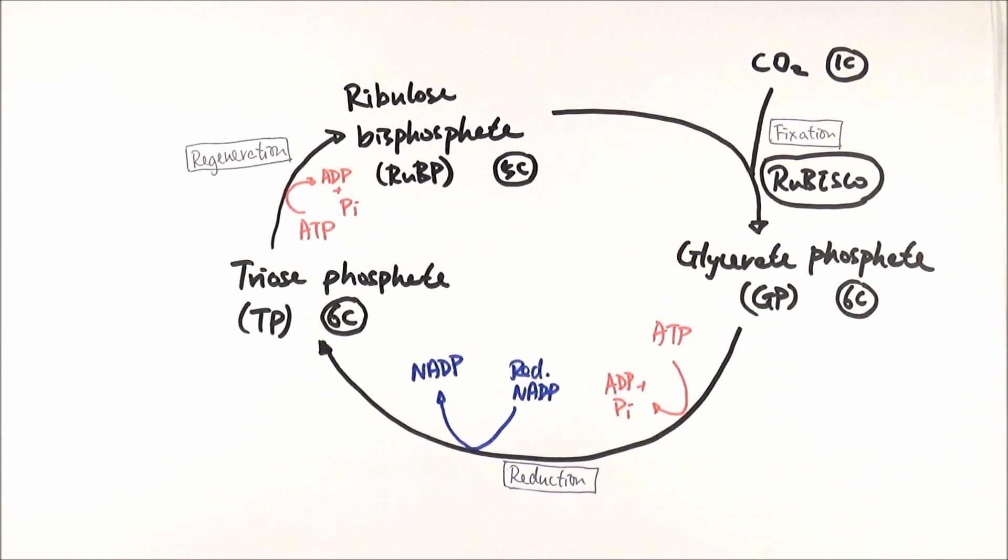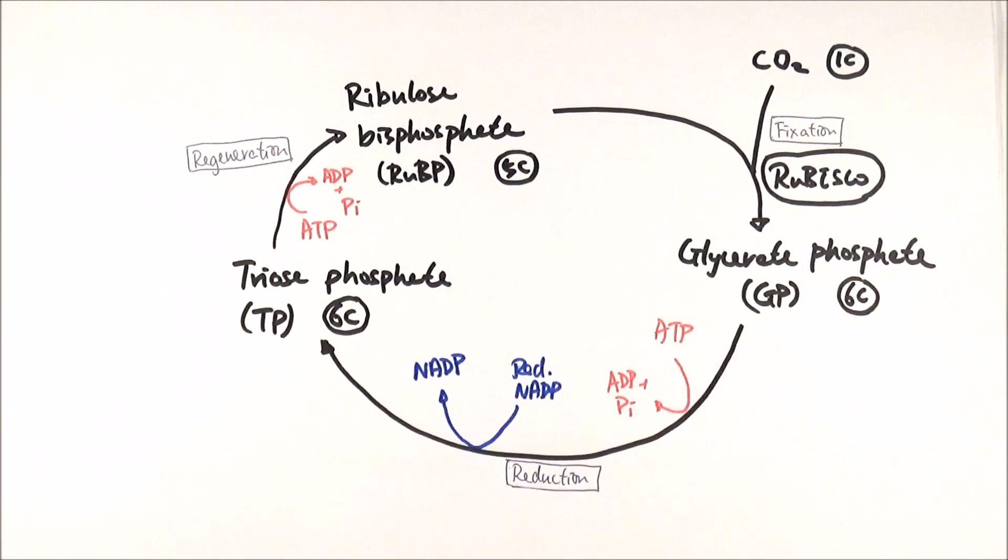Now, obviously, if we just look at this, it doesn't actually tell us how we can get glucose or any other sort of biological molecules that the plants need to make up their structure or allow them to function. So now we actually look at to see how these two things here can then go to develop into different biological molecules.